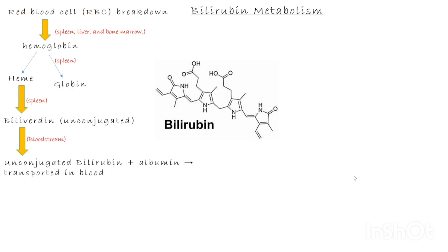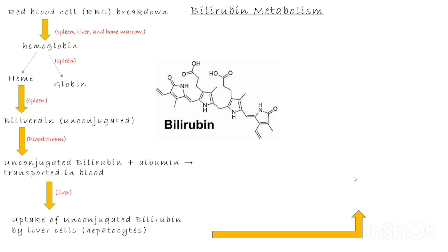This form of bilirubin is not water soluble, meaning it cannot dissolve in the blood on its own. To move through the bloodstream, unconjugated bilirubin binds to a protein called albumin. This albumin-bilirubin complex travels to the liver. When unconjugated bilirubin reaches the liver, the liver cells called hepatocytes take it up. An important enzyme called UDP-glucuronosyltransferase converts unconjugated bilirubin into conjugated bilirubin, making it water soluble so the body can easily get rid of it.